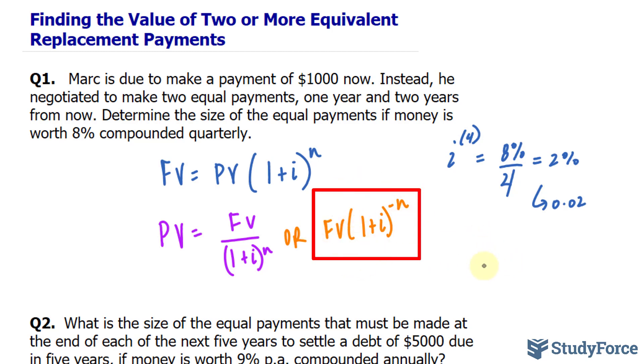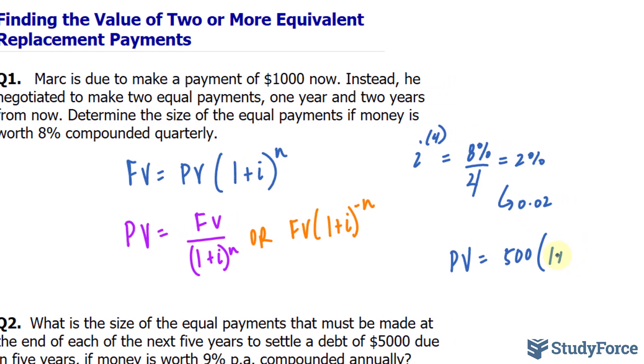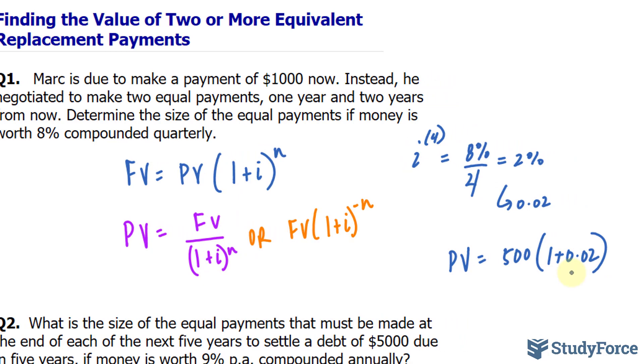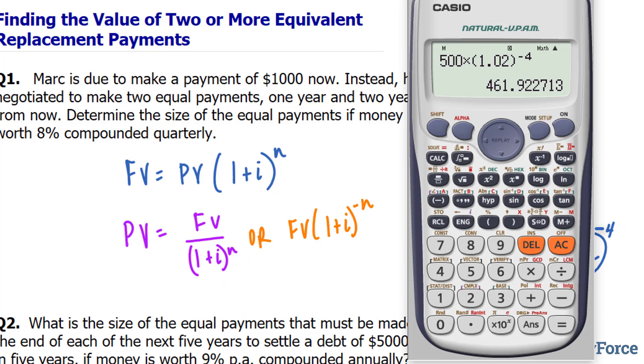So I'll use this formula. The present value of 500(1+0.02)^-4, and since it's 500 in one year, that means 4 periods. If we multiply this out using our calculator, we end up getting 461.